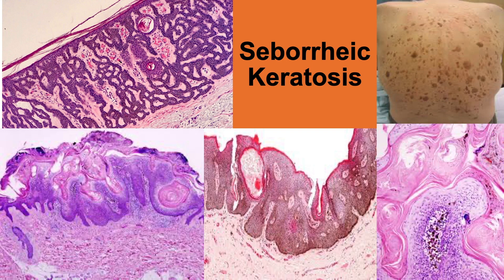Some of these cells contain melanin as a result of transfer from neighboring melanocytes. Other morphological variants of seborrheic keratosis are the hyperkeratotic, adenoid, acantholytic, and desmoplastic.